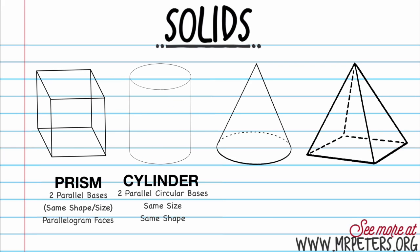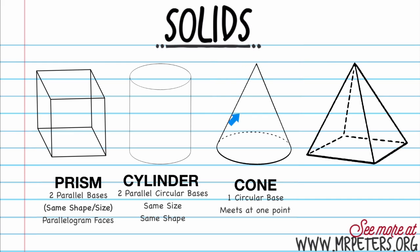Then we have the cone. The cone has only one circular base, and then it meets at one point or one vertex at the top and makes a tip — kind of looks like a triangle. But remember, the cone has the circular base.